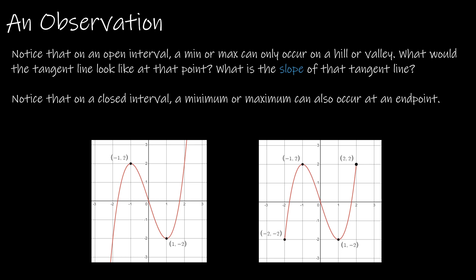So just a quick observation because it's going to come into play in our next video. Notice that on the open interval, a min or a max can only occur on a hill or a valley. So I've got a hill here. I've got a max. I've got a valley here. I've got a min. And again, it's relative. So what would the tangent line look like at that point? Well, if I drew a tangent line here, it makes sense that it would have a horizontal tangent line. And same thing here.